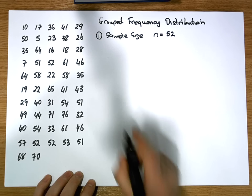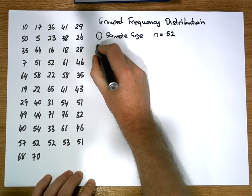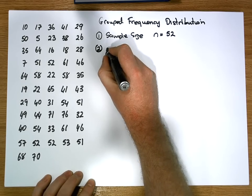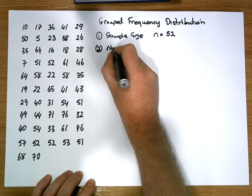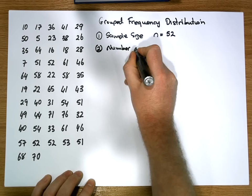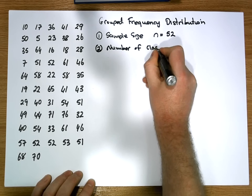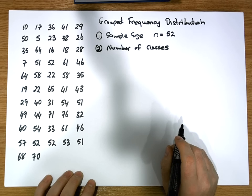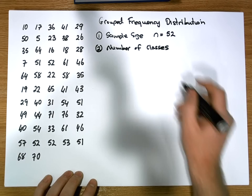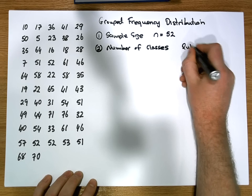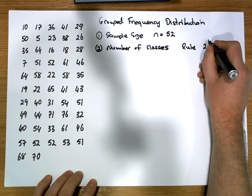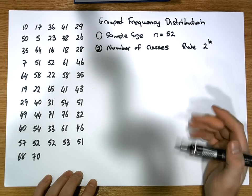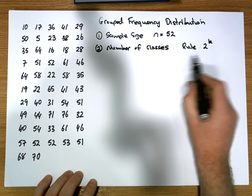The next step in constructing the grouped frequency distribution is to identify how many classes we should have in our distribution. There's a simple rule we're going to use called the two-to-the-power-of-k rule, where k represents the number of classes we could have in our distribution.